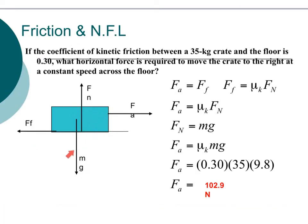We use a diagram showing a 35 kilogram crate with mass due to gravity, normal force, applied force, and frictional force. Using Newton's first law: if the coefficient of kinetic friction between the crate and the floor is 0.30, what horizontal force is required to move the crate to the right at a constant speed? The applied force equals the force of friction, so applied force equals coefficient of friction times normal force.